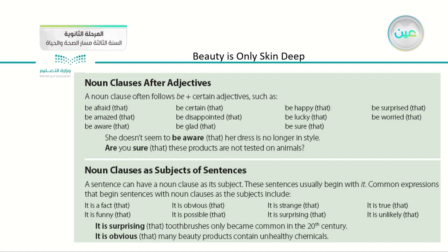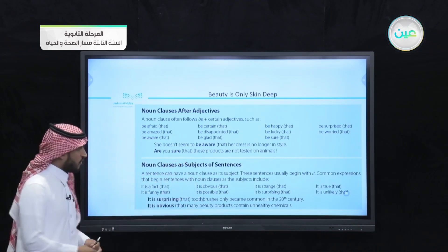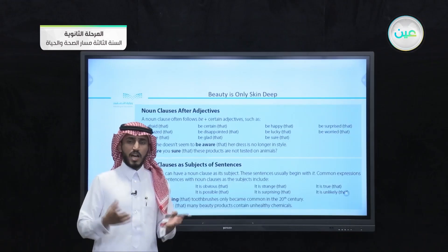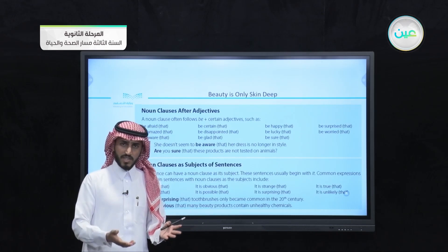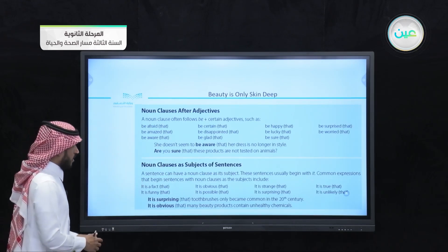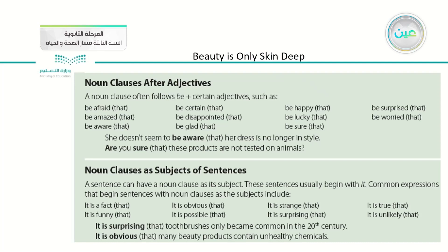Then we talked about noun clauses after adjectives. We have a list of adjectives like be afraid, be amazed, be aware, be certain, and so on. The adjective follows the verb 'be,' which is am, is, are in the present, and was or were in the past. One example is: 'She doesn't seem to be aware that her dress is no longer in style.' Here 'be aware' is the adjective, and we have the noun clause following it.